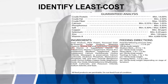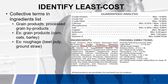So how do we identify least cost? Collective terms are going to be the first way to identify it. Looking at your ingredients, you see grain products, processed grain by-products — those are termed collective terms, or umbrella terms. What that means is grain products could include corn, oats, or barley, and those could be used in grain products interchangeably — and you wouldn't know the difference whether there was more corn, less oats, or more barley.